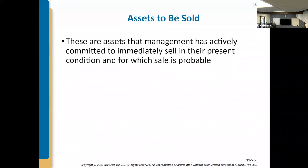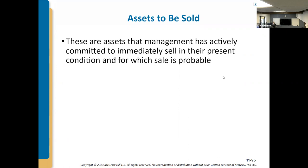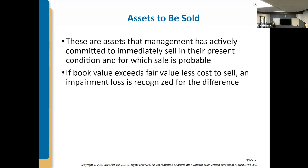When we have assets to be sold, if a company is actively committed to selling them in their current condition and the sale is probable, that would be considered an asset held for sale. Both conditions must be in play: actively committed to selling in present condition without significant additional investments needed, and a probability — more likely than not — that they will sell.